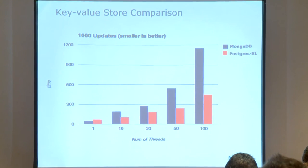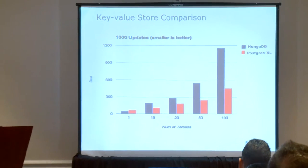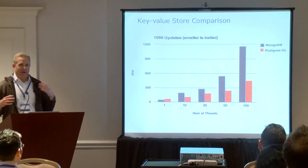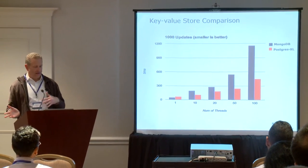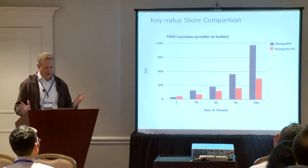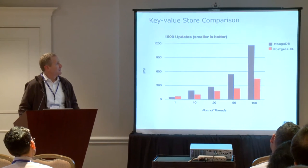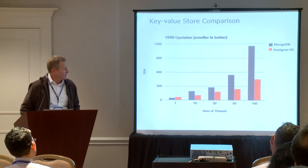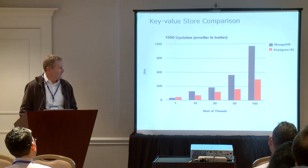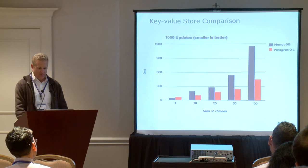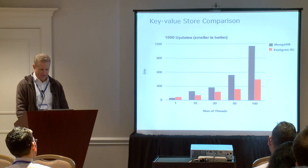We also ran some tests against MongoDB. Comparing inserts, MongoDB was a little faster. For selects, they were pretty comparable. Doing an update-oriented workload, Postgres XL could handle that type of workload better than MongoDB in some tests we did, kind of out of the box with basic base configuration.